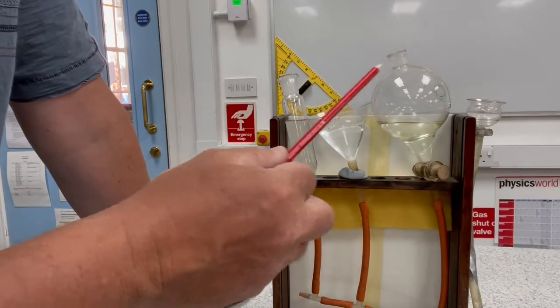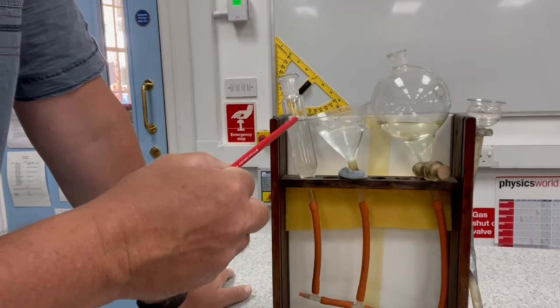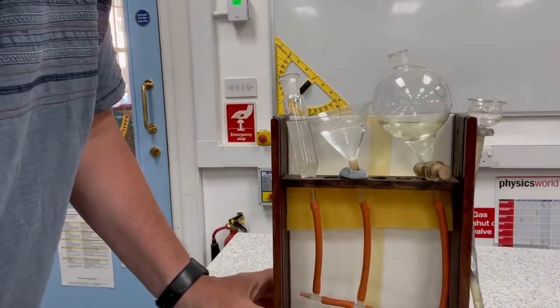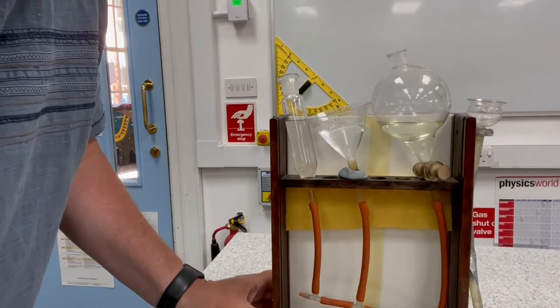even though the area of this one and this one is much bigger than the area of this tube and this tube. So if I just shake it around, you can probably see the water sloshing around.